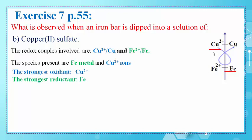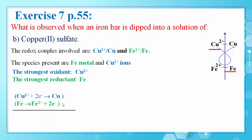Cu2+ is the strongest oxidant and Fe is the strongest reductant. According to the gamma rule, a spontaneous reaction takes place between Cu2+ and Fe to give Fe2+ and Cu. The half reactions are: Cu2+ is reduced to Cu by gaining two electrons, and Fe is oxidized to Fe2+ by losing two electrons. Since both half reactions involve two electrons, we can directly add them to get the overall equation: Cu2+ + Fe → Fe2+ + Cu.